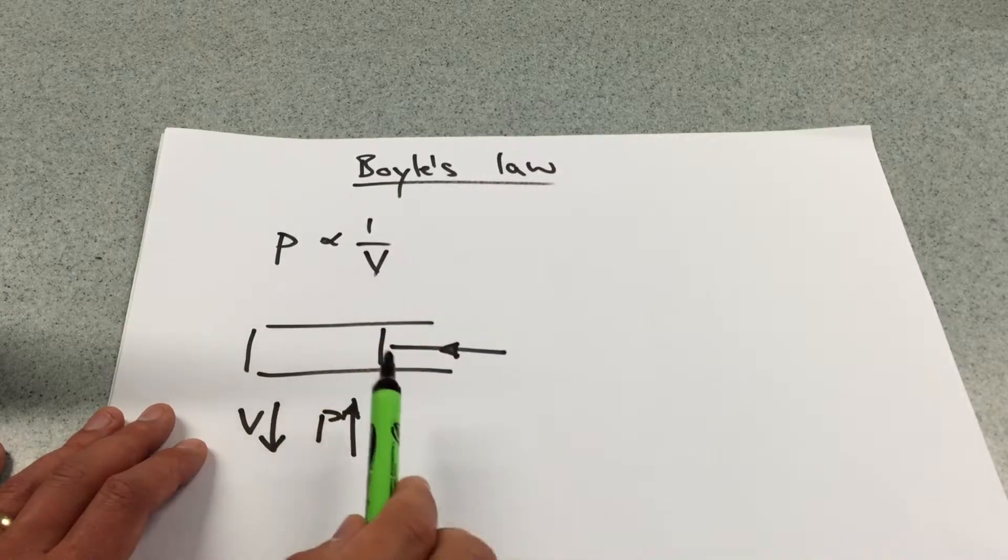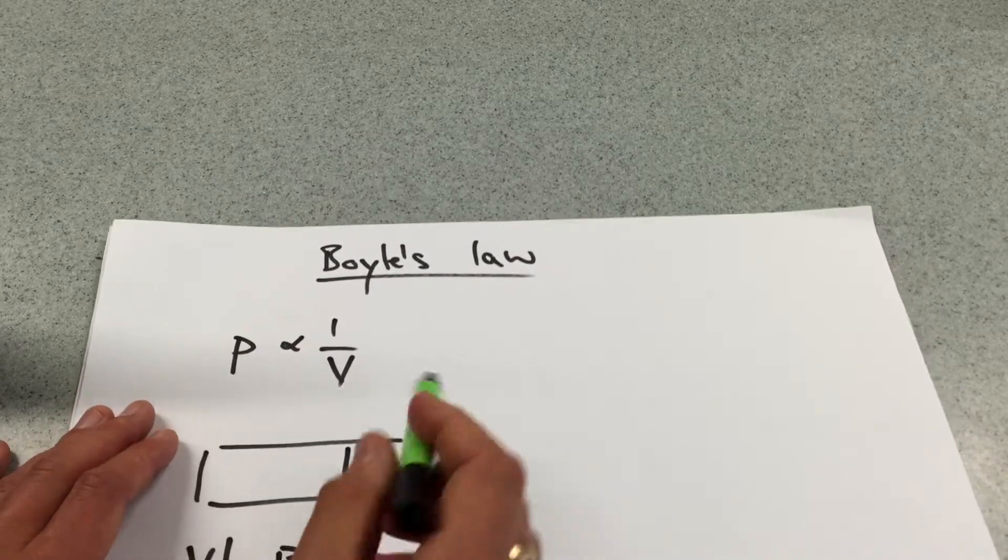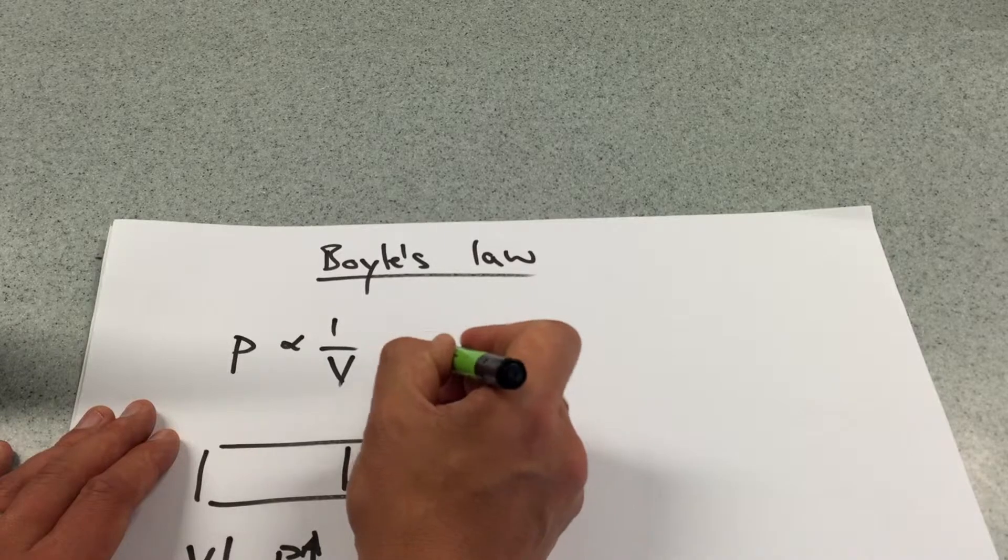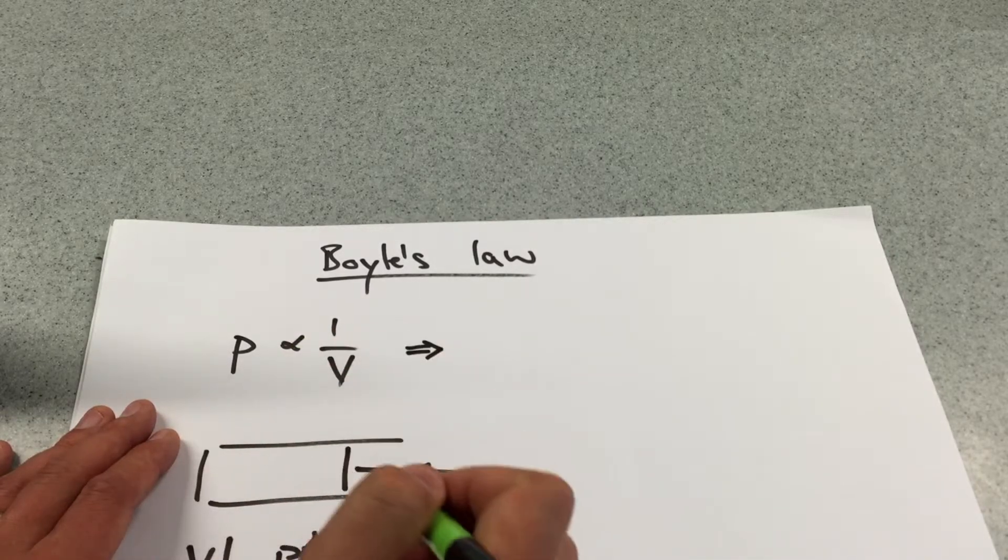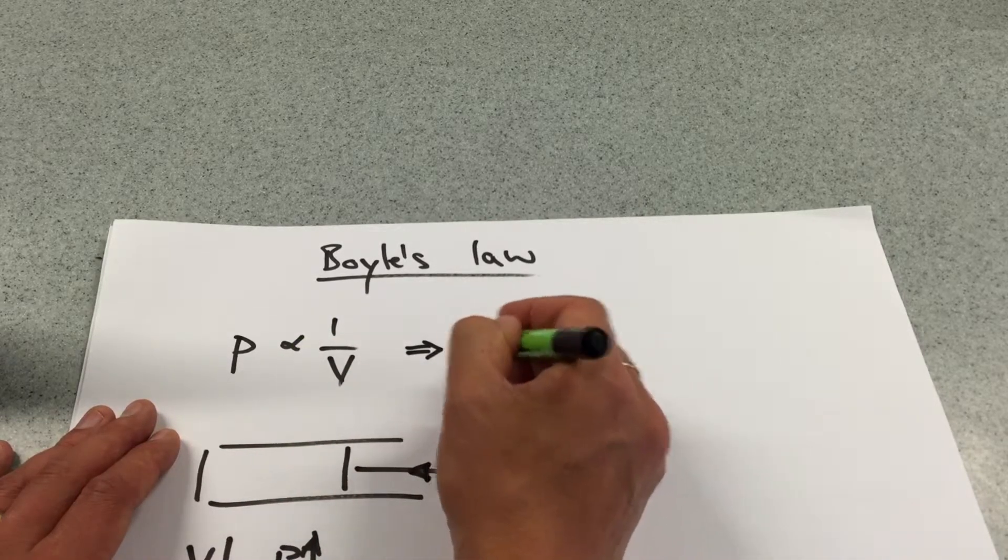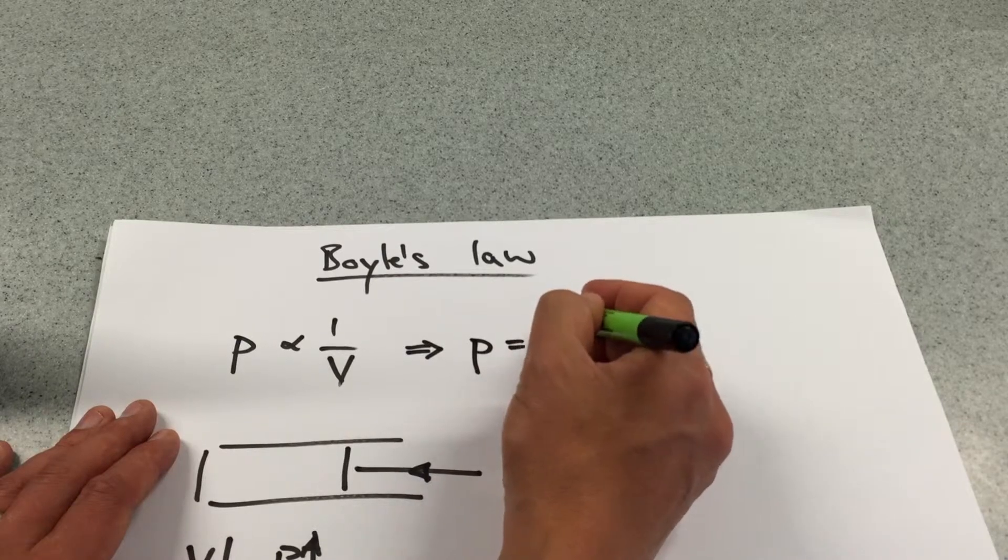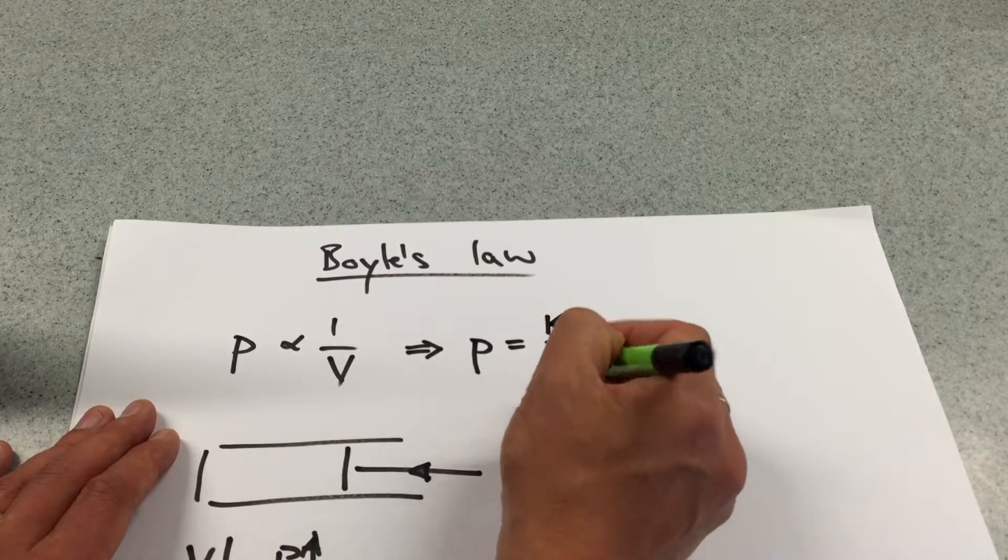So this is an inverse relationship, P is proportional to 1/V, and very quickly, therefore, we can take out the proportional sign and we can simply say that pressure is going to equal to a constant divided by volume.